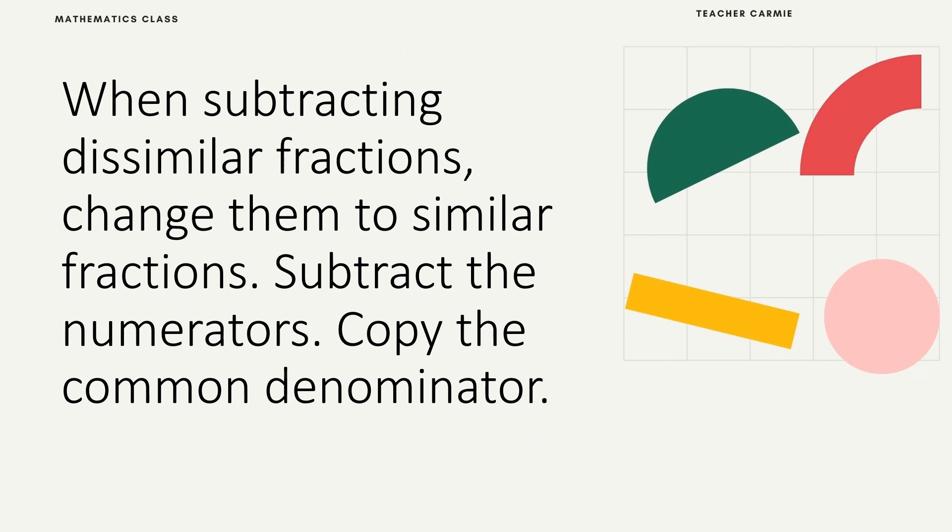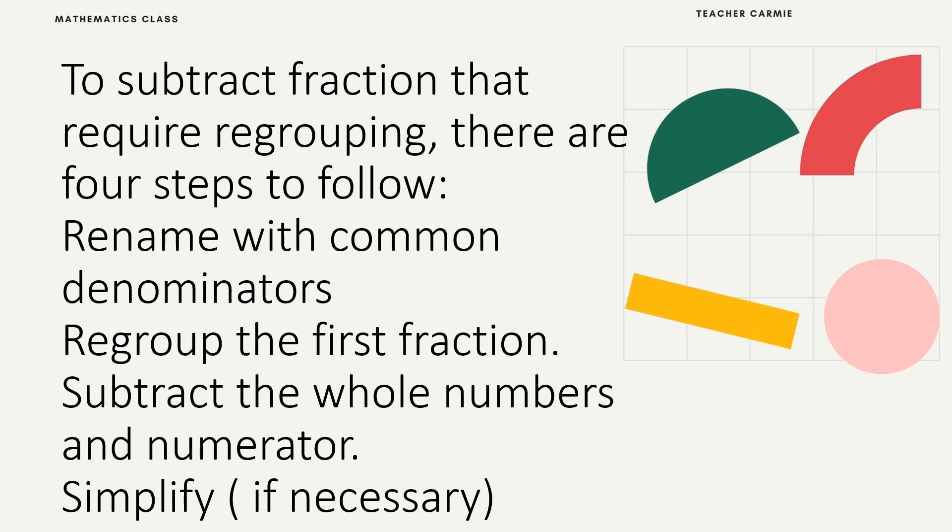When subtracting similar fractions: first, change them to similar fractions, subtract the numerators, then copy the common denominator. To subtract fractions that require regrouping, there are four steps: rename the common denominators, regroup the first fraction, subtract the whole numbers and the numerator, then simplify if necessary.